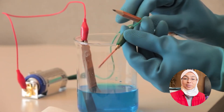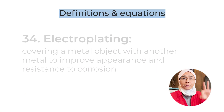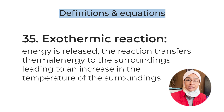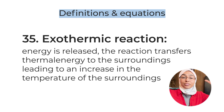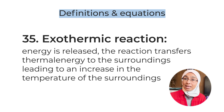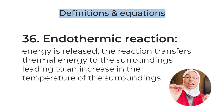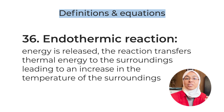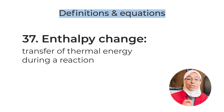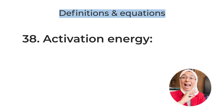Definition number thirty-five: exothermic reaction — a reaction in which energy is released. The reaction transfers thermal energy to the surroundings and the temperature of the surroundings increases. Definition number thirty-six: endothermic reaction — a reaction in which energy is absorbed. The reaction takes in thermal energy from the surroundings, causing a decrease in temperature — a thermometer would show a temperature drop.